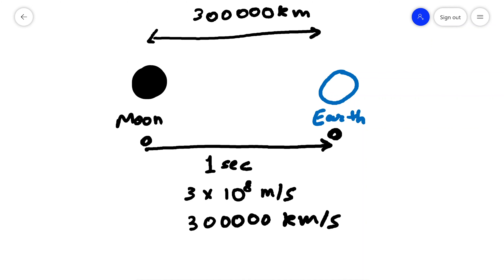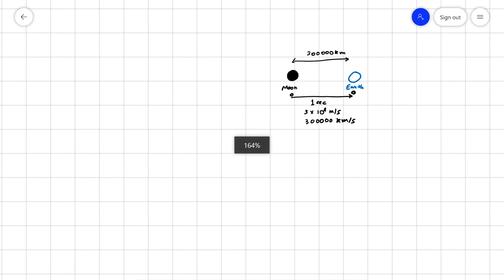The photon carrying information about how the moon looks is basically carrying information about how the moon looked one second ago. So when you're looking at the moon, you're looking one second into the past — you're not seeing the current version of the moon. Looking one second into the past isn't that big a deal, so let's go a little bit further.